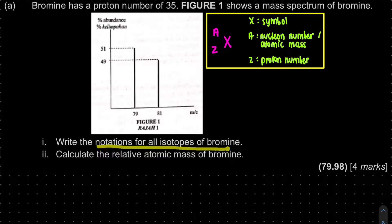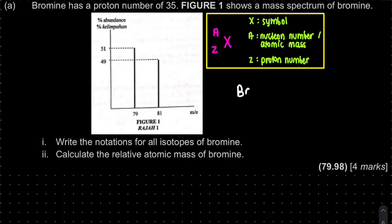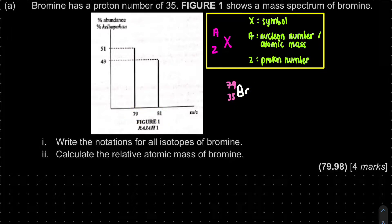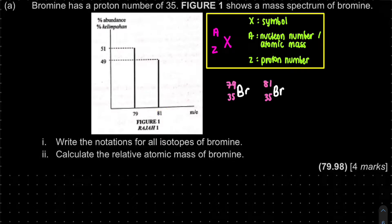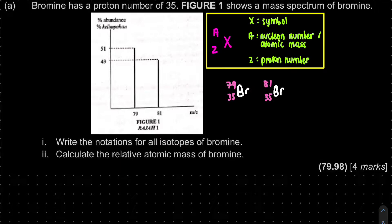For bromine, we have ⁷⁹Br and ⁸¹Br based on the mass spectrum. For the first isotope, the symbol is Br, nucleon number is 79, and proton number is 35. For the second isotope, the symbol is Br, proton number is still 35, but the nucleon number is 81. These two bromine isotopes have the same proton number but different neutron numbers.